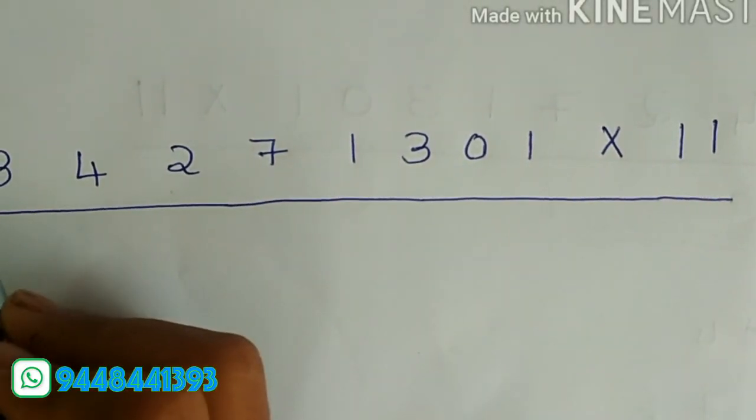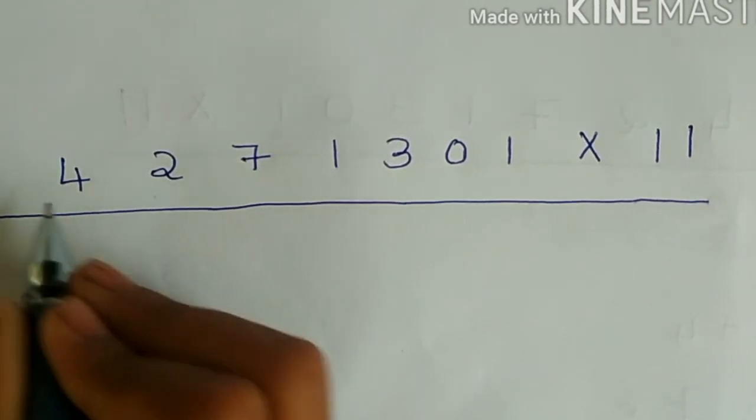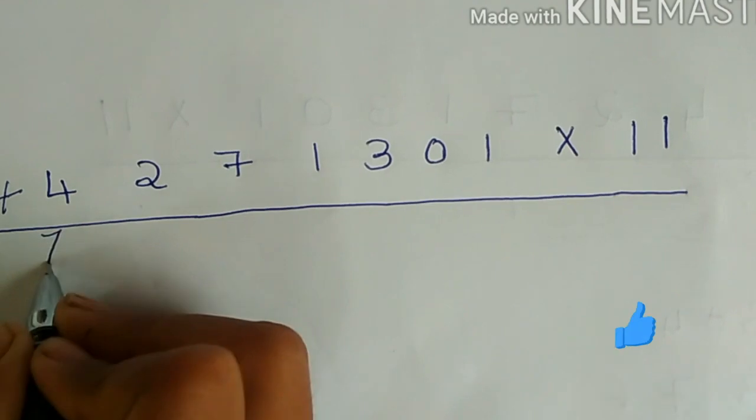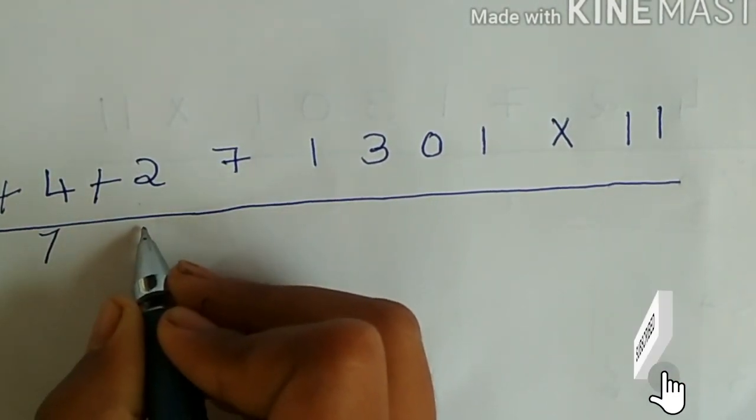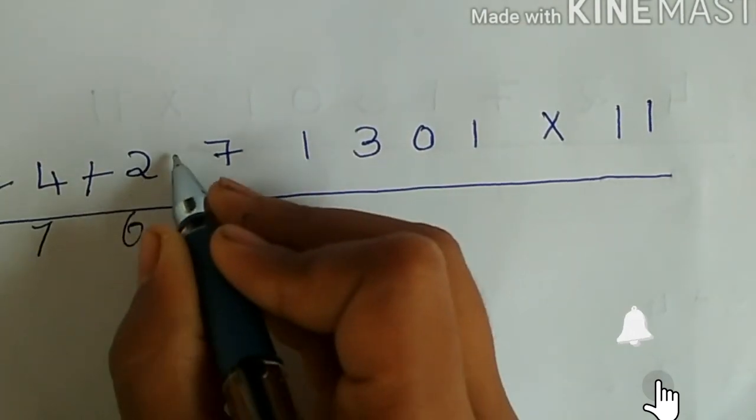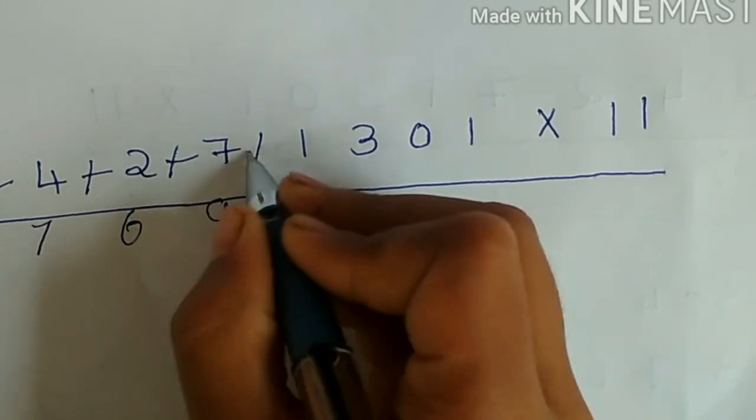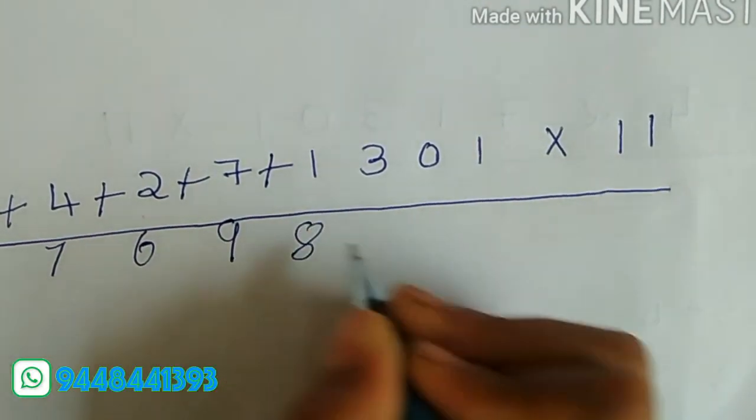Let's do it with a larger number. Always, the first digit is same, that is 3. Next, 3 plus 4, that is 7. Next, 4 plus 2, that is 6. Next, 2 plus 7, that is 9. Next, 7 plus 1, that is 8.